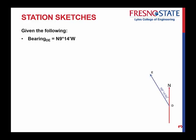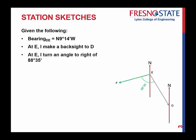Now let's use bearings instead of azimuths. Given that I have a bearing from D to E of North 9 degrees, 14 minutes West — at E, I look back at D. That line from E to D is my reference line, that is my back sight, that's where I'm gaining my direction from. I make a back sight and look back there. Now at E, I turn an angle to the right of 88 degrees, 35 minutes. What I want to figure out is: what is my bearing from E to F?